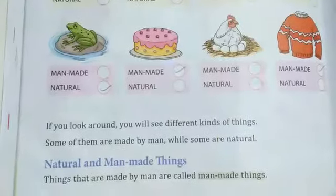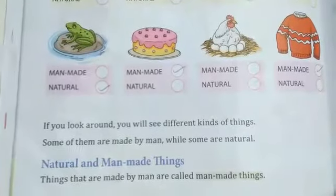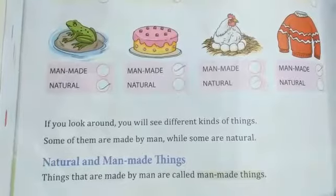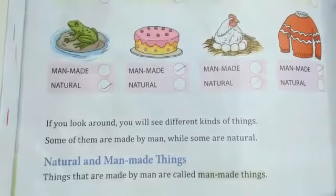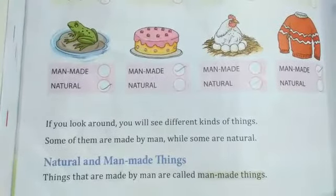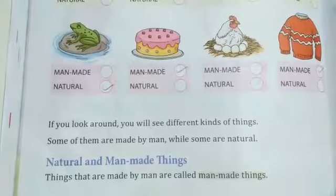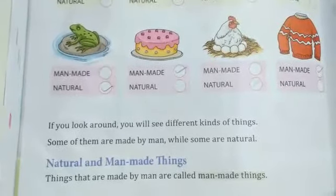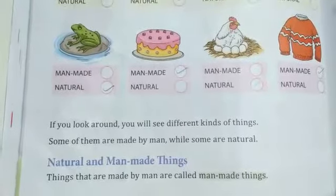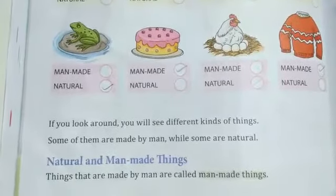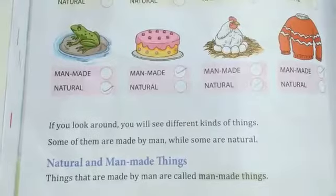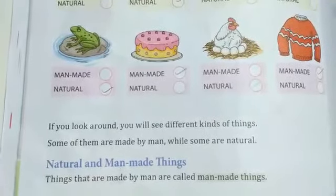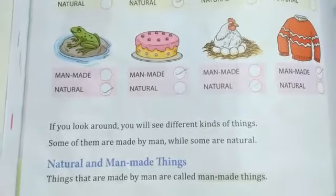Now you can see the frog — frog is a natural thing. Next, cake is also man-made because we create the cake, and cake is non-living. Next is hand, and hand is also natural. Next is a sweater, and a sweater is a man-made thing.